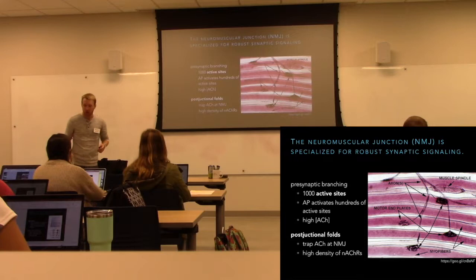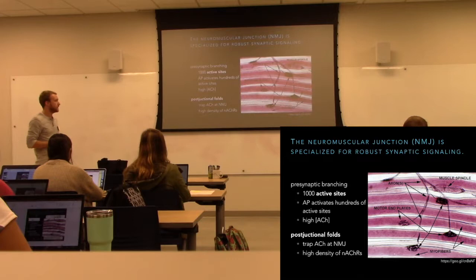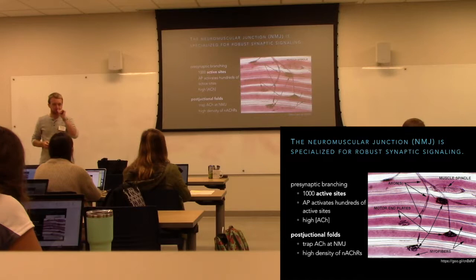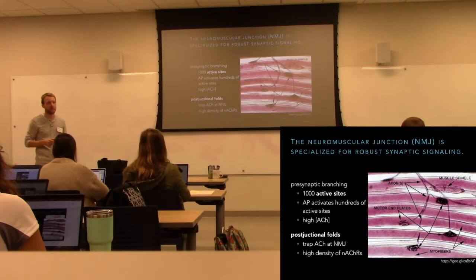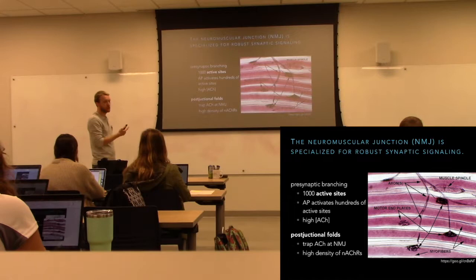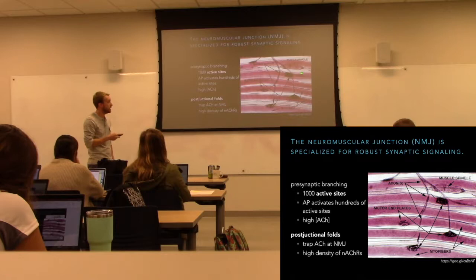Once activated, those motor neurons are going to cause muscle contraction — and this will be reliable because of the neuromuscular junction. We get reliable, strong postsynaptic currents because the neuromuscular junction is a very strong synapse. This is very different from what we see in the central nervous system, where we have a bunch of weak synapses that all have to work together and vote. There's no voting here — all that voting took place in the central nervous system. Out in the periphery, once the decision is made to move, we should move.